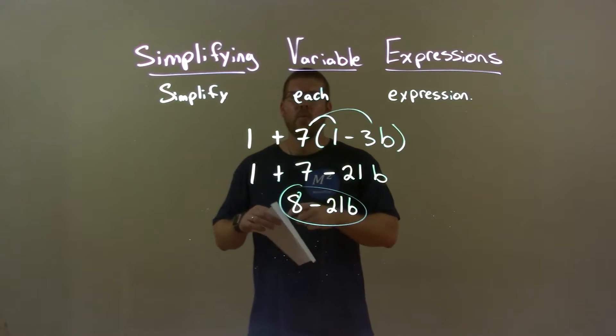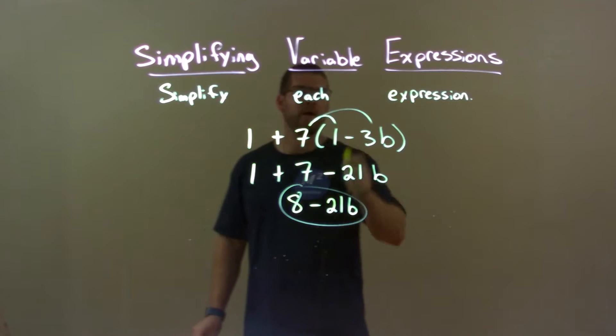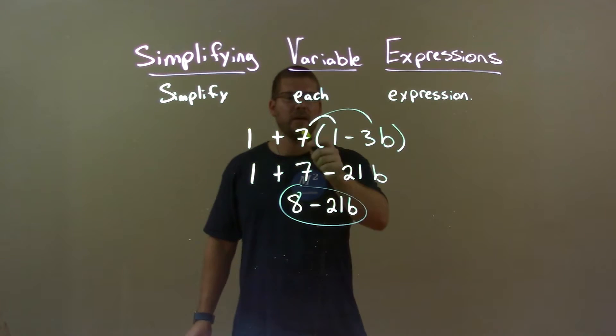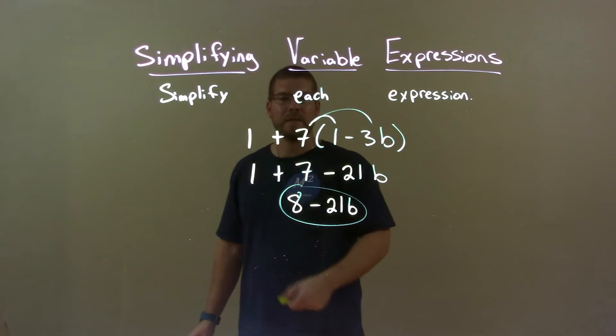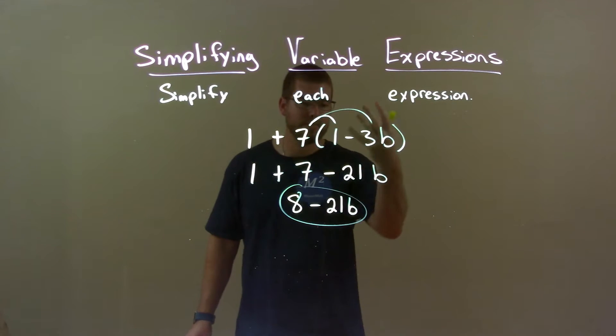Quick recap, we have 1 plus 7 times 1 minus 3b and we have to simplify this. Distribute the 7 across within the parentheses then we combine the 7 and 1 together to get 8 and so my final answer is just 8 minus 21b.